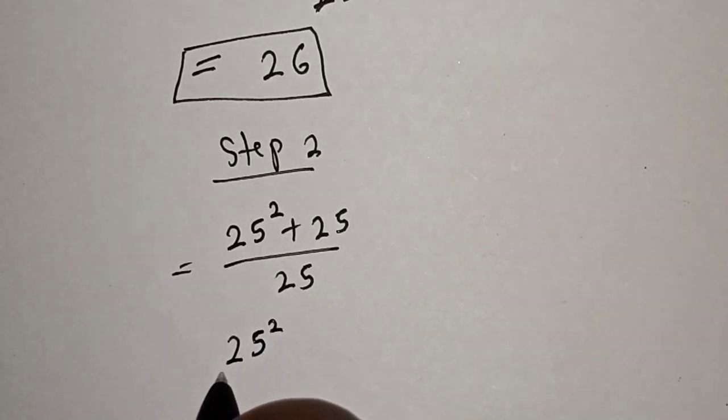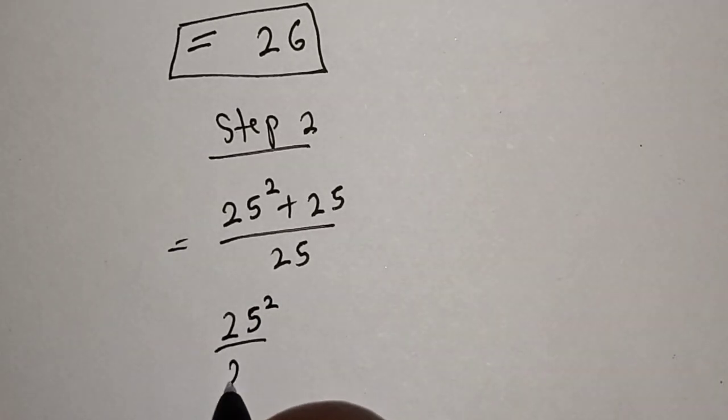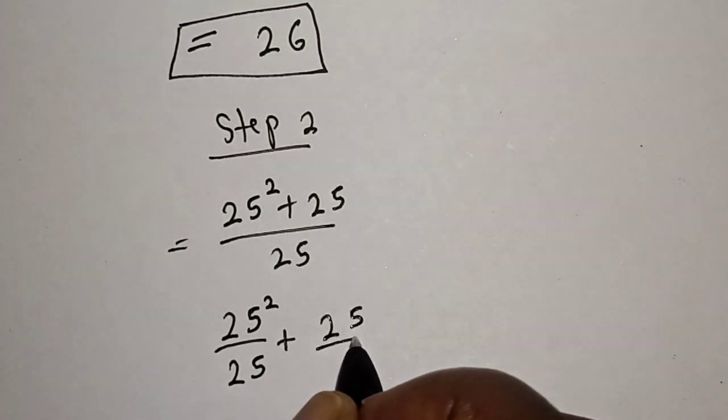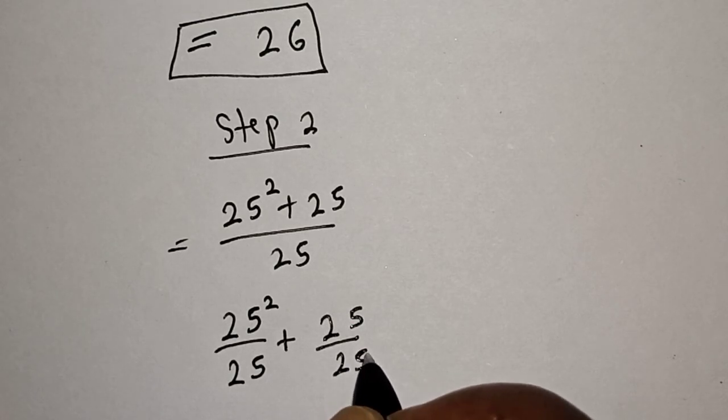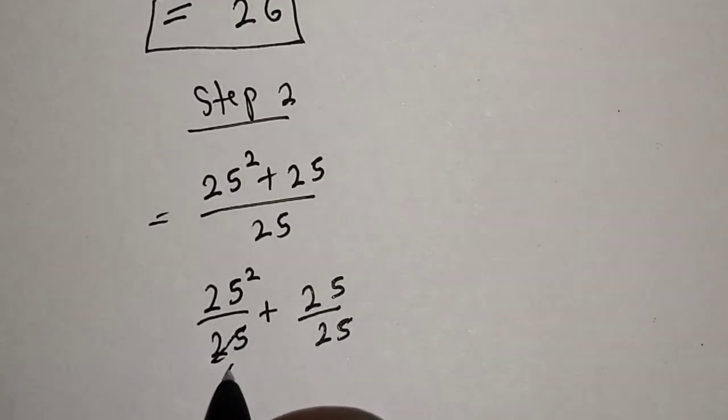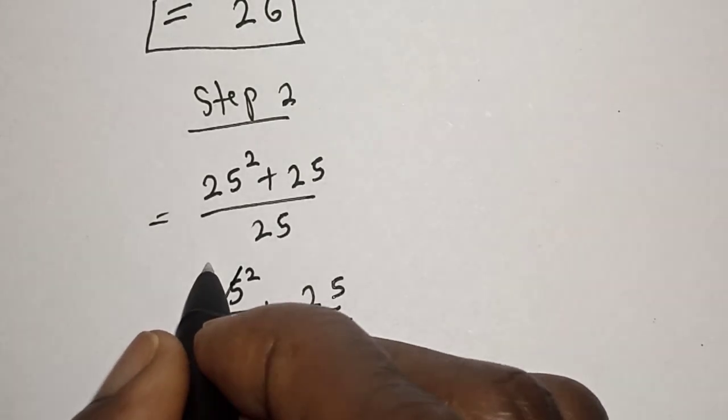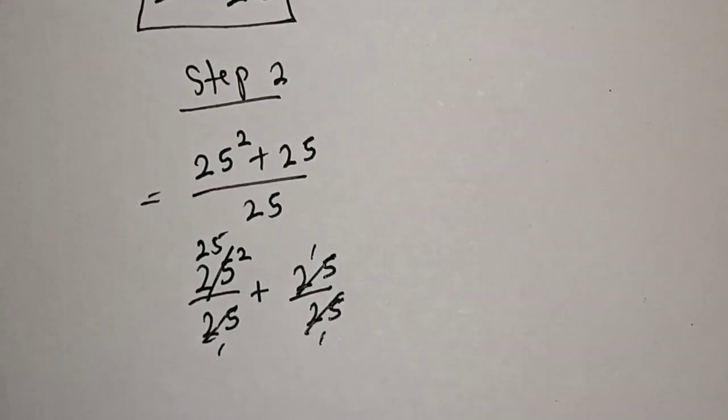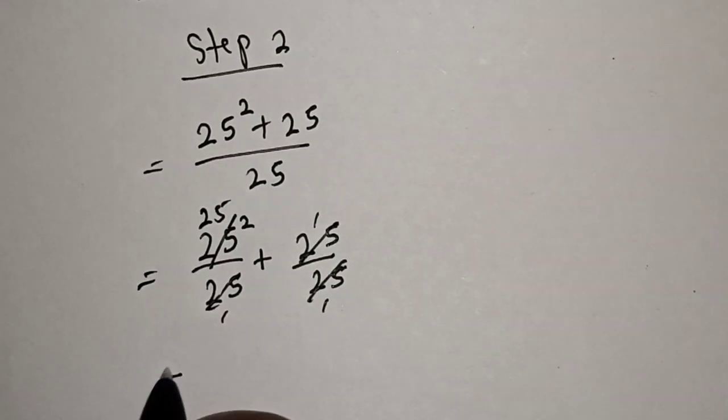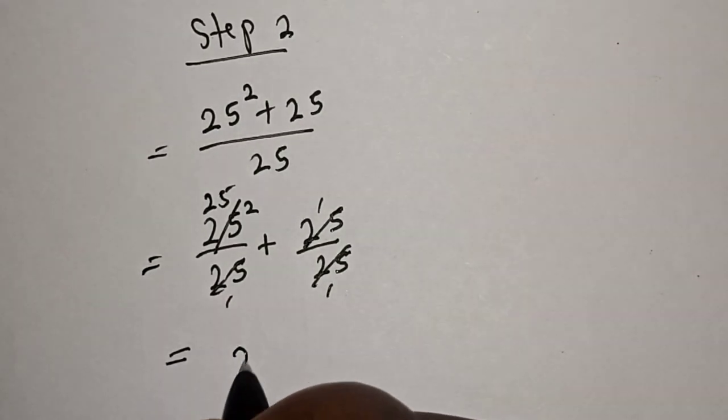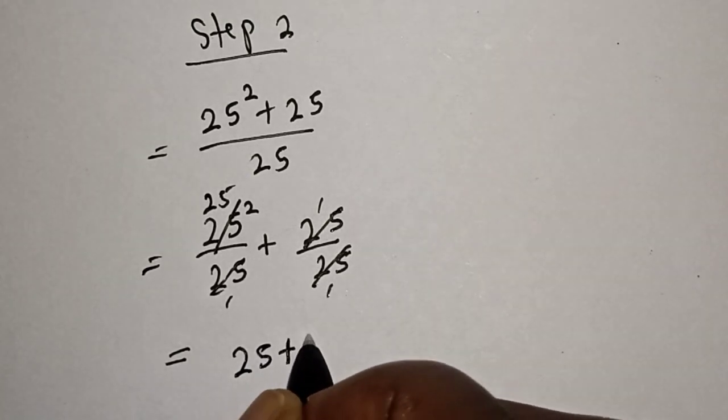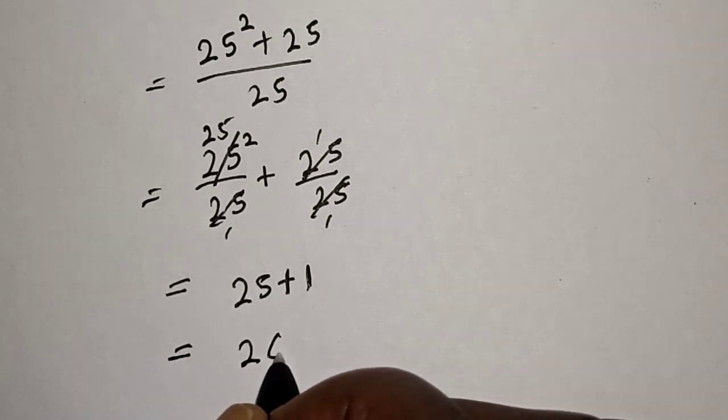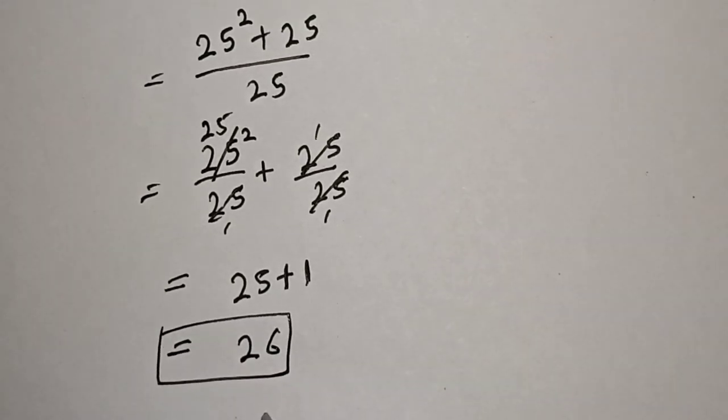Then 25 squared over 25, that's 25 over 1. And 25 over 25, that's 1. So this is equal to 25 plus 1. This is equal to 26, and that is our final answer.